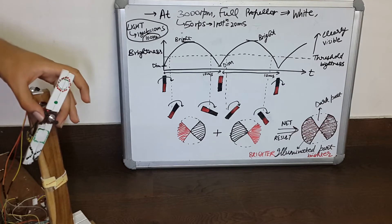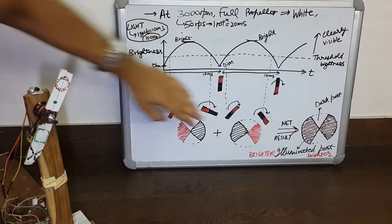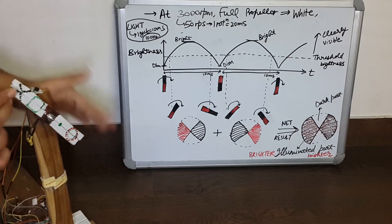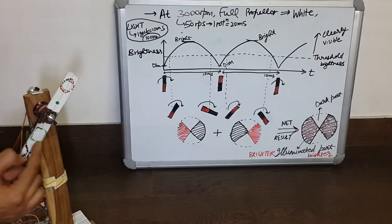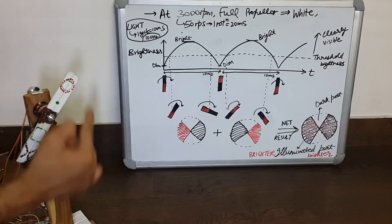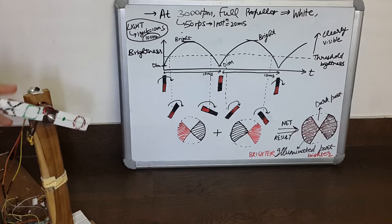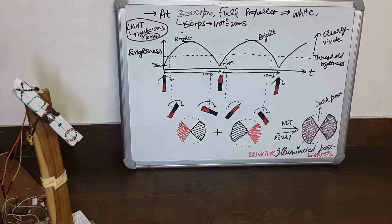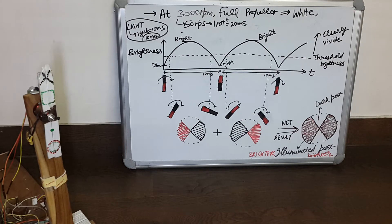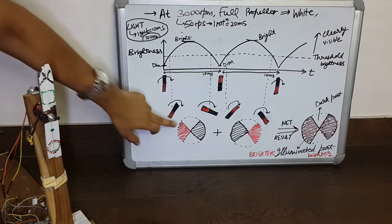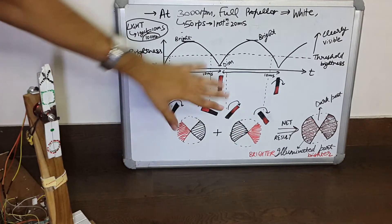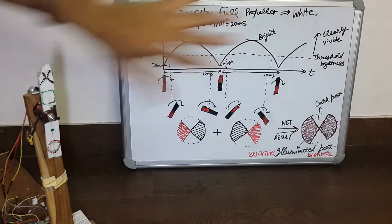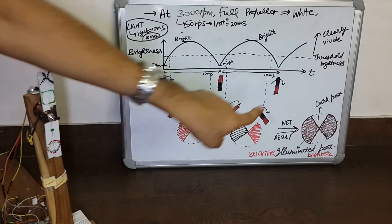When the brightness goes below the threshold, the propeller is not seen and it moves to a new position. Then the brightness increases above the threshold again, and we see the propeller moving from this position to this position. The black part illuminates this part and the red part illuminates this part. Then brightness decreases again, and the propeller returns to its original position. The net result is that these parts are illuminated twice and overlap to form a brighter illuminated region.